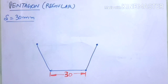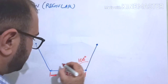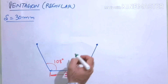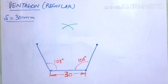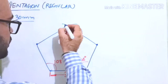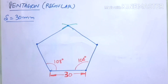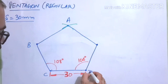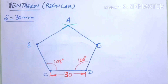The included angle between each adjacent pair of lines is 108 degrees. Each of those sides is also 30 mm. Open the compass equal to 30 mm, mark arcs from the endpoints of the upper two lines, and their intersection gives the fifth vertex. Join all points to complete the pentagon, naming the vertices A, B, C, D, and E.